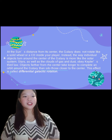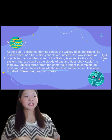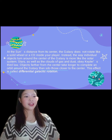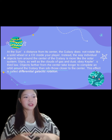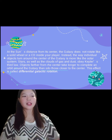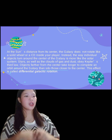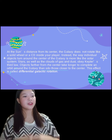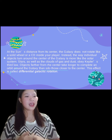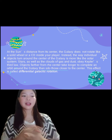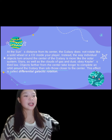At the sun's distance from its center, the galaxy does not rotate like a solid disk. Instead, the way individual objects orbit around the center of the galaxy is more like the solar system — stars as well as clouds of gas and dust obey Kepler's third law. Objects further from the center take longer to complete an orbit around the galaxy than those closer to the center. This effect is called Differential Galactic Rotation.